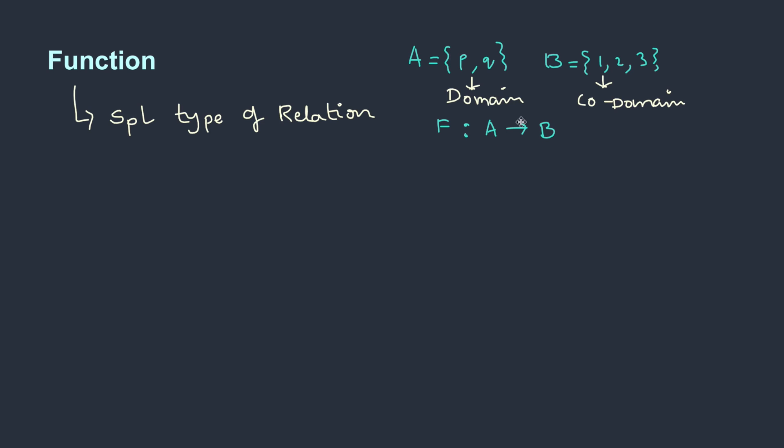Relating an element of A to B is called a mapping. So we can read this as F is a mapping from A to B. Basically it's a relation, so I could express it something like F becomes, maybe P is mapped with 1. So I could write as (P, 1) and Q may be mapped with 2, so (Q, 2).